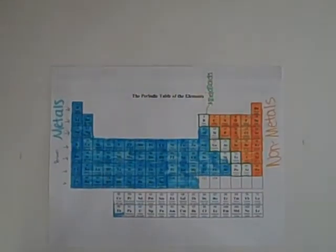Metals are located on the left side of the metalloids, which are highlighted in blue. The non-metals are located on the right side of the metalloids, which are highlighted in orange. The metalloids are in between the two.